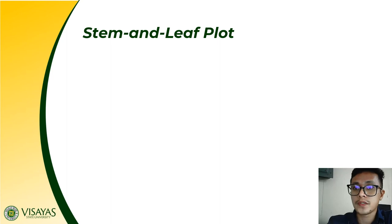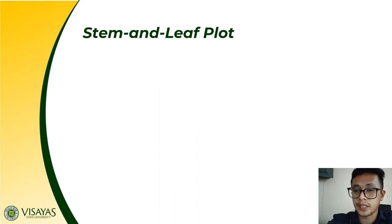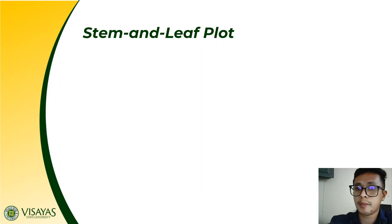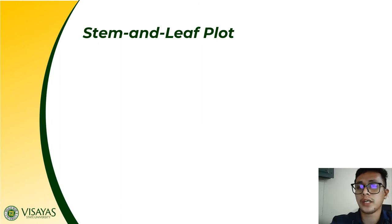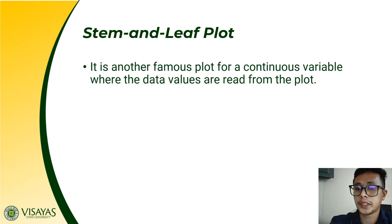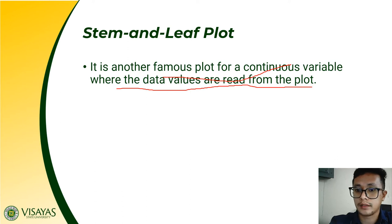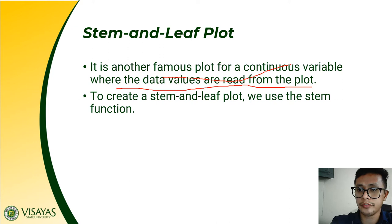Any questions so far? We have now covered three plots: the basic plot, the histogram, and the normal probability plot. Aside from those, we also have the stem-and-leaf plot. It is another well-known plot for continuous variables where data values are read directly from the plot. To create a stem-and-leaf plot, we use the stem function.